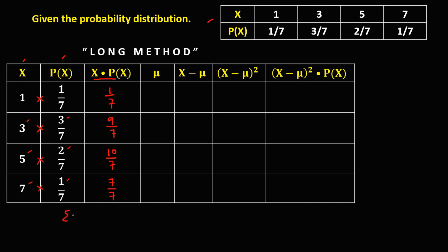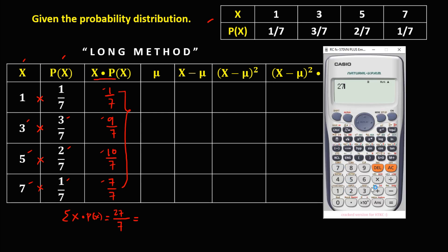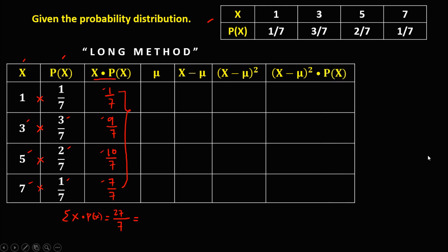Then we find the summation of x times P(x). Just add all these numbers. Since we have the same denominators, copy the 7 and add the numerators: 1 plus 9 is 10, plus 10 is 20, plus 7 is 27. So that's 27/7. Converting to decimal: 27 divided by 7 equals 3.8571.